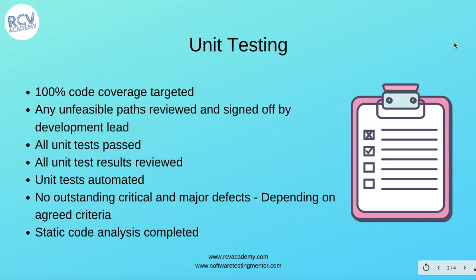At the unit testing level, some criteria could be: 100% code coverage targeted; any unfeasible paths reviewed and signed off by the development lead. Unless all these criteria are ticked, you can't say you have finished unit testing for the particular user story or task. A third criteria could be that all unit tests should pass, all unit test results should be reviewed, and unit tests should be automated.